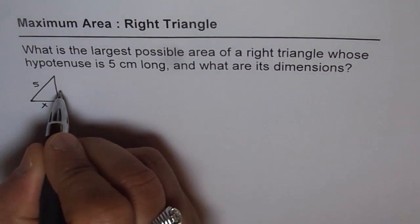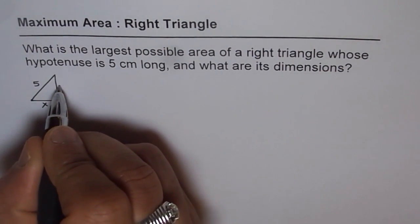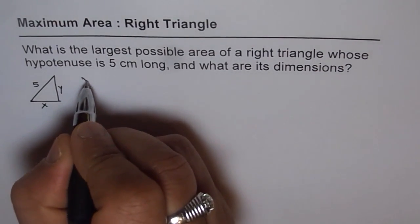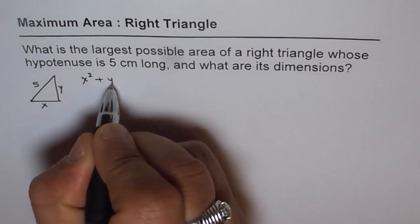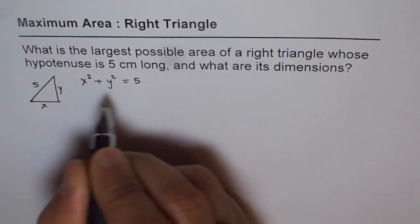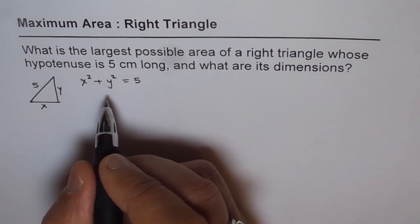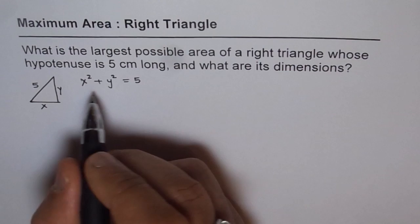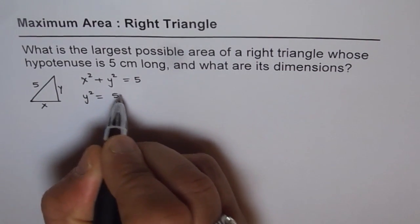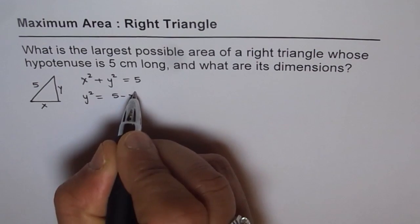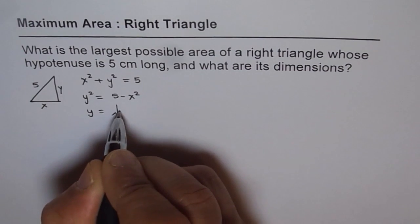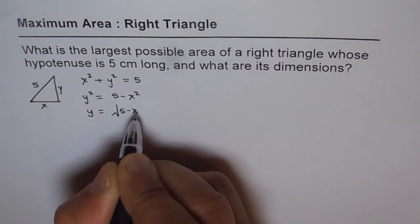Let the base be x and the height be y. The relation will be x squared plus y squared equals 5 squared. We write y in terms of x: y squared equals 5 squared minus x squared, so y equals the square root of 25 minus x squared.